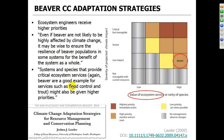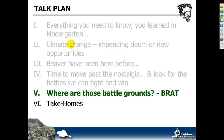That is a very good principle that we can apply here — that systems and species that provide critical ecosystem services, again beaver being a good example, might also be high priority. That's a nice articulation of the rationale behind using beaver.